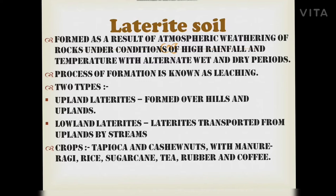Laterite soil is mainly of two types: upland laterites, formed over hills and uplands, and lower laterites, which are upland laterites transported from uplands by streams. Major crops grown in this soil include tapioca, cashew nuts, and manure crops. You can also grow ragi, rice, sugarcane, tea, rubber, and coffee.